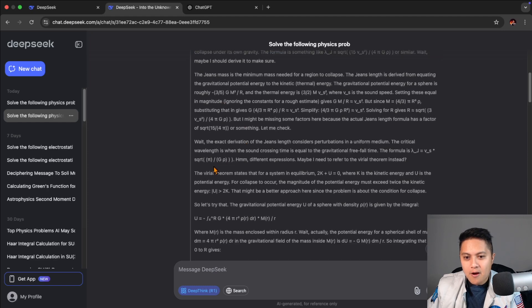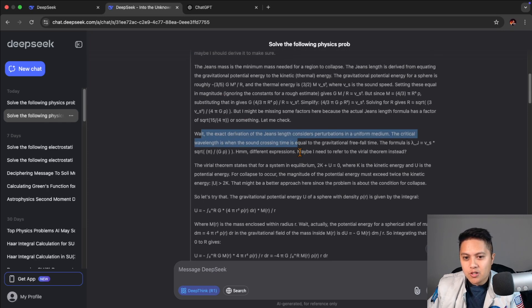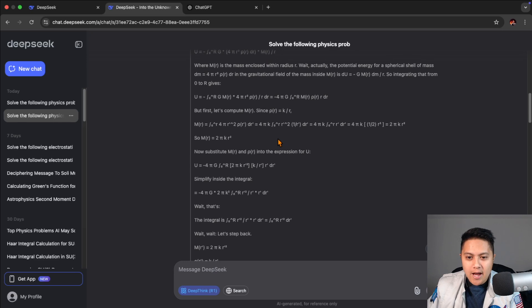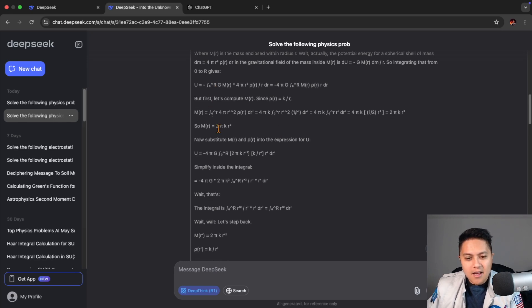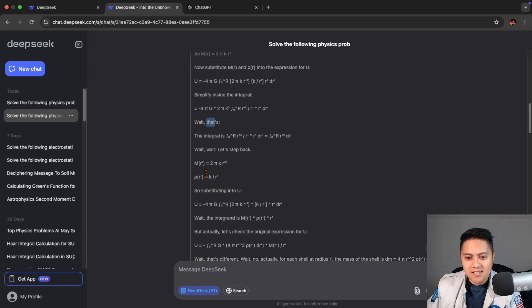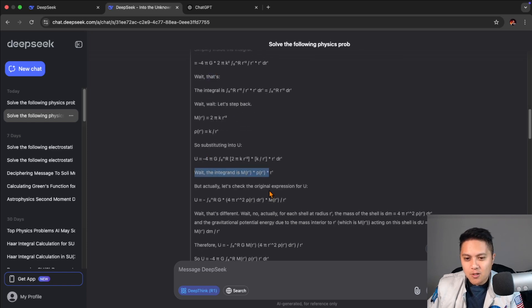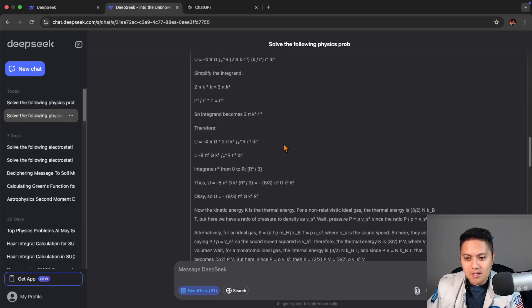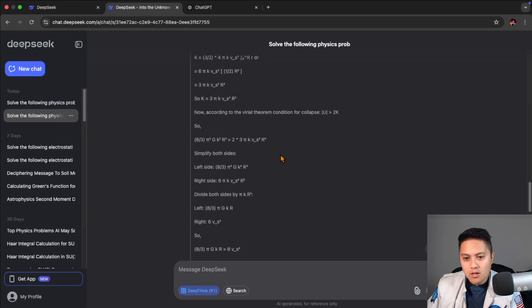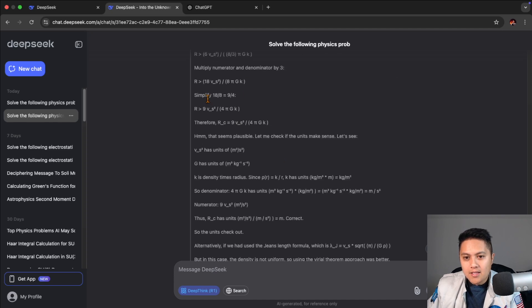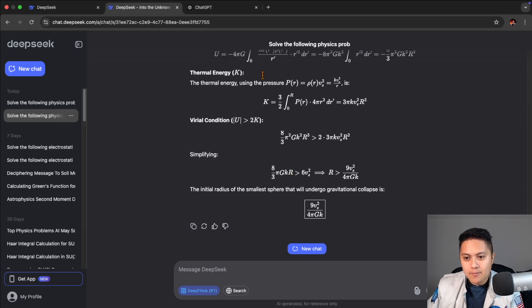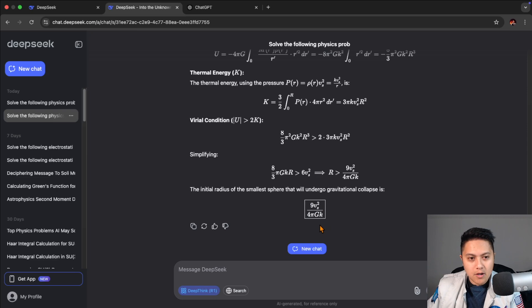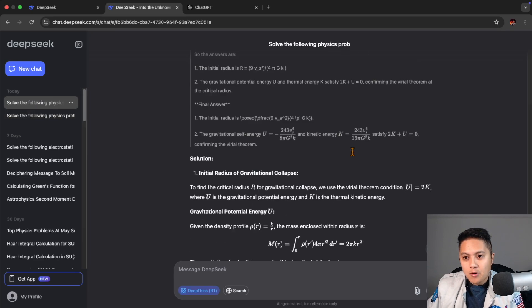But of course, it doesn't just stop there. It really tries to make sure it's on the right track. And I just, I cannot get over all the waits and stuff because it just sounds so human in a weird way. And I don't know if I'll ever get used to it, to be honest. Anyways, the chain of thought goes through the whole problem here. And indeed, it winds up with the correct answer of nine times speed of sound squared over four pi gk. So go down all the way here, indeed gets the right answer.